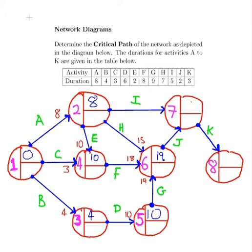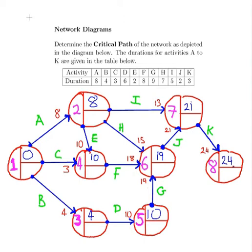For node seven, J takes two time units, giving twenty-one. I takes five time units, which would finish at time thirteen. The greater of the two is twenty-one. There is only one activity required from node seven — activity K, which takes three time units — so the earliest finish for node eight is twenty-four.